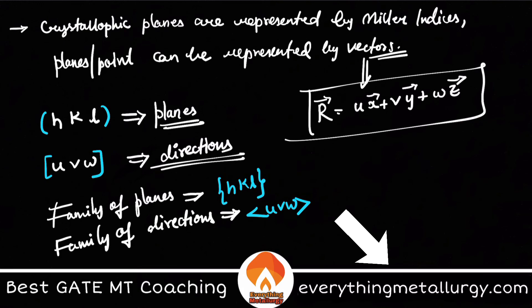So this is how we use Miller indices to represent crystallographic planes. To summarize the three steps once again: first, find the intercepts on the x, y, z axes; second, reciprocate them; and third, simplify to the lowest integer.